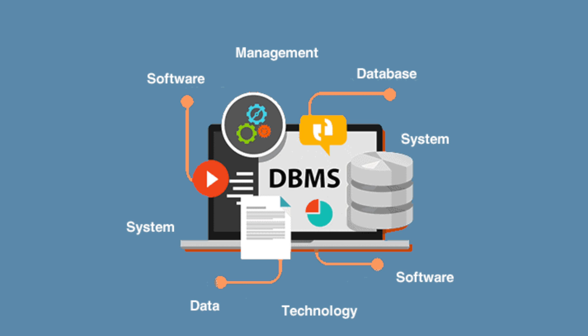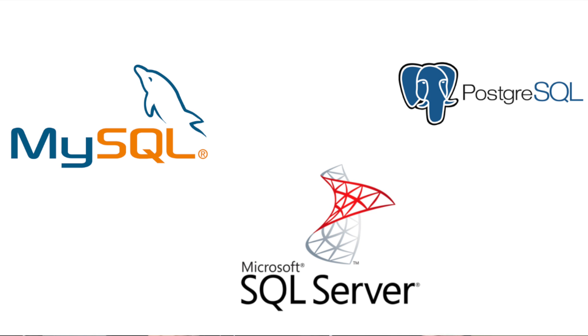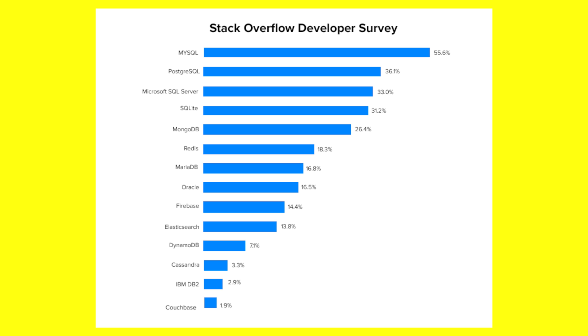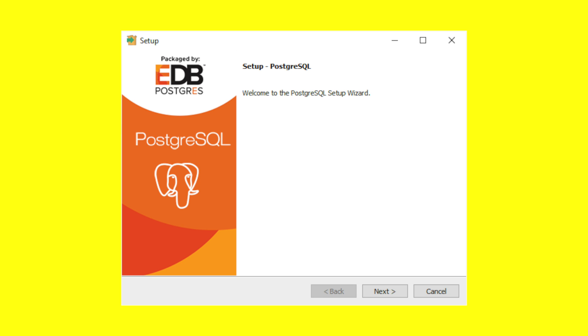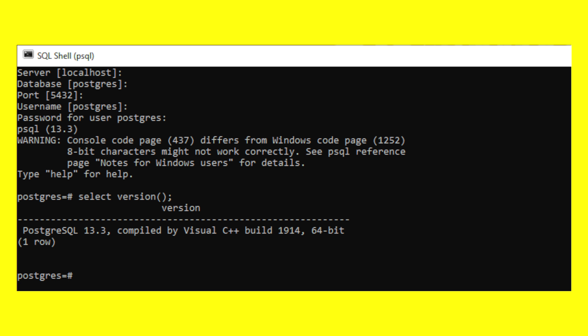Before diving deep into SQL and how I use it, let's understand the structure of a database management system. First, we have database management software. These softwares are developed by different companies, organizations, and open source teams. I mainly use PostgreSQL for my work because it is open source and easy to use. Once you install the application, you can start using SQL for various activities. SQL is a universal language supported by almost all databases.